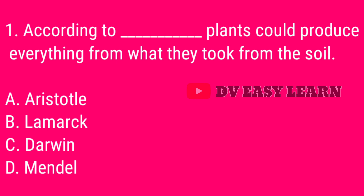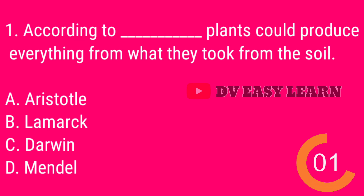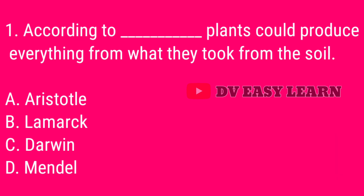Question number 1. According to Van Helmont, plants could produce everything from what they took from the soil. Correct answer: Aristotle.